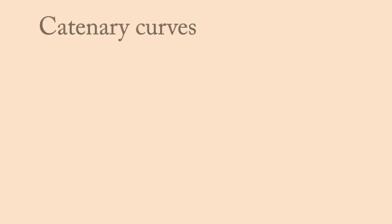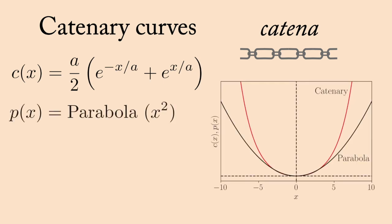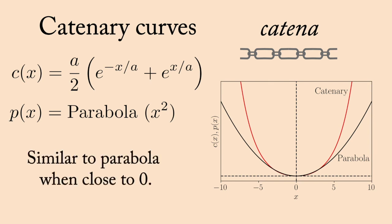As a final example, let us explore the case of catenary curves, which derives its name from the Latin word catena, which means chain. Catenary curves are given by the hyperbolic cosine, which is the exponential cousin of the parabola. The parabola and the catenary appear to be very similar when x is close to 0. Yet, when we move away from 0, the two functions begin to vary dramatically due to the presence of the exponential.